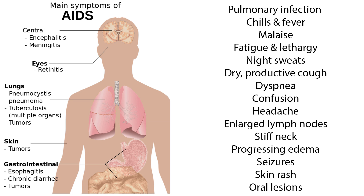Pulmonary infection is usually the first symptom of AIDS and is a constant threat. Other signs and symptoms are many, including chills and fever, malaise, fatigue and lethargy, night sweats, dry productive cough, dyspnea, confusion, headache, enlarged lymph nodes, stiff neck, progressing edema, seizures, skin rash, and oral lesions.